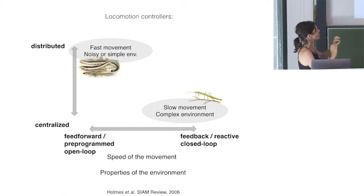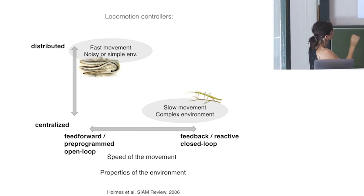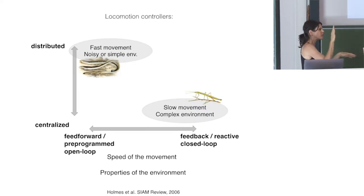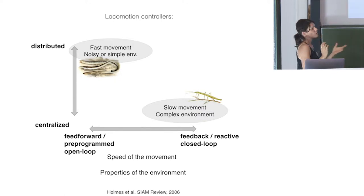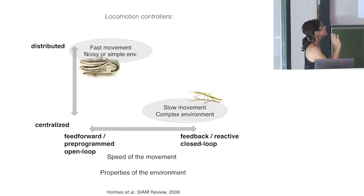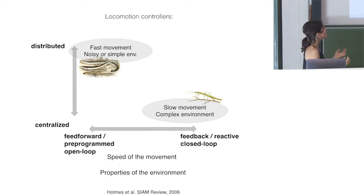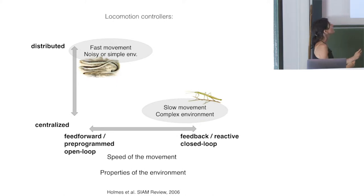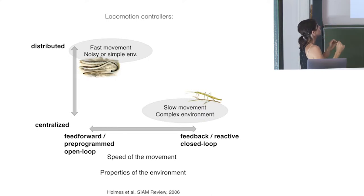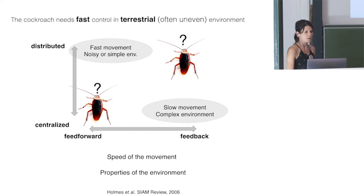Two extreme examples: the stick insect walking on branches in all orientations really needs to know where each foot is located before lifting another, so a feedback-based centralized controller works best. On the other hand, when animals fly through air or swim through water — relatively predictable environments — or when movement is very fast and information is noisy, a distributed feedforward system works far better. So where do cockroaches fit?